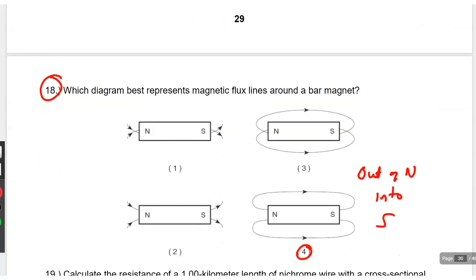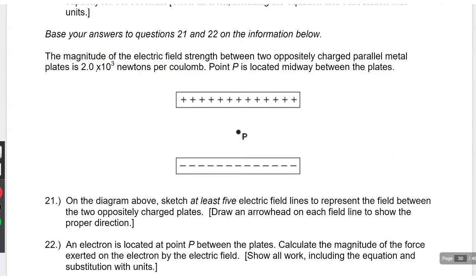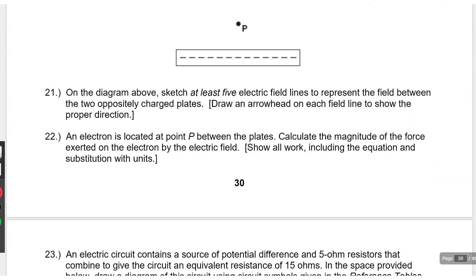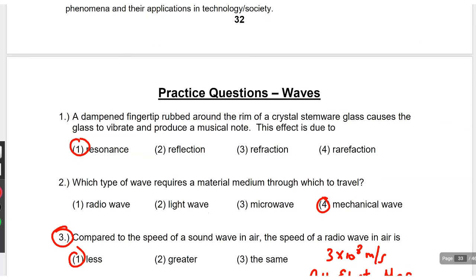Okay. Let's see. What else is here? Out of north into south. Out of north. Arrows. Magnetic arrows go out of north into south. And we're headed for the home stretch.